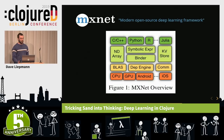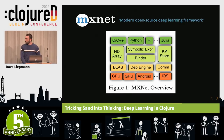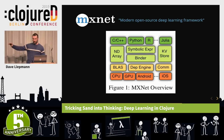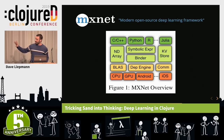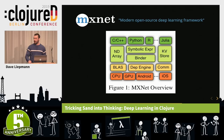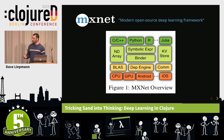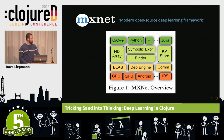Looking at the MXNet architecture: at the bottom is the hardware itself. One level up in yellow is BLAS, LAPACK, and other tools to efficiently talk to the hardware. One level up from that in light green is the MXNet abstraction layer, which provides a consistent API across different high-level languages — multi-dimensional arrays, key-value stores, and so on. At the top, individual languages like C++, Python, R, and Julia have APIs to that middle layer.